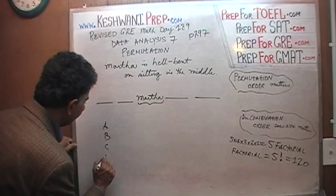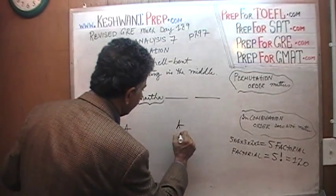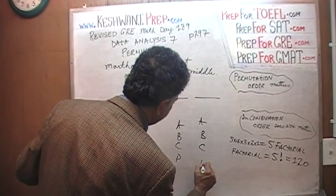Let's pretend that she has four friends. A, B, C, D. She has four friends A, B, C, D.